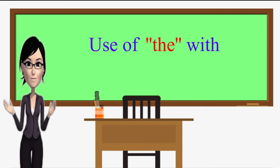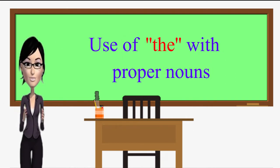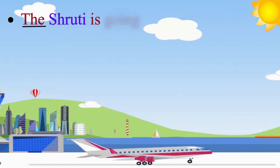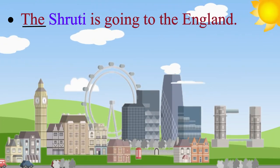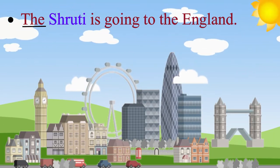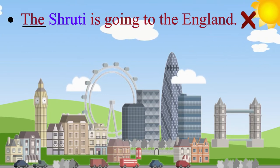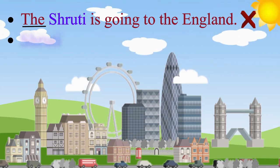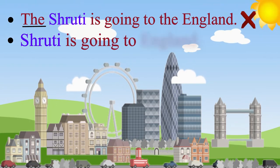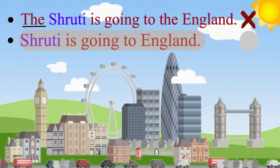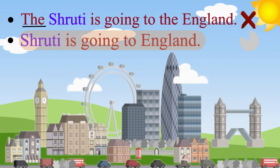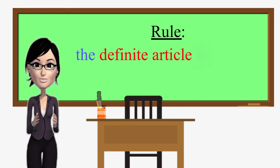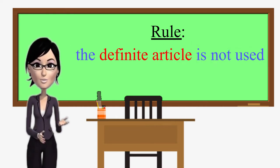Use of 'the' with proper nouns. Listen to this sentence: 'The Shruti is going to the England.' Is the sentence correct? No, it's not. The correct sentence would be: 'Shruti is going to England.' As a rule, the definite article is not used with proper nouns.